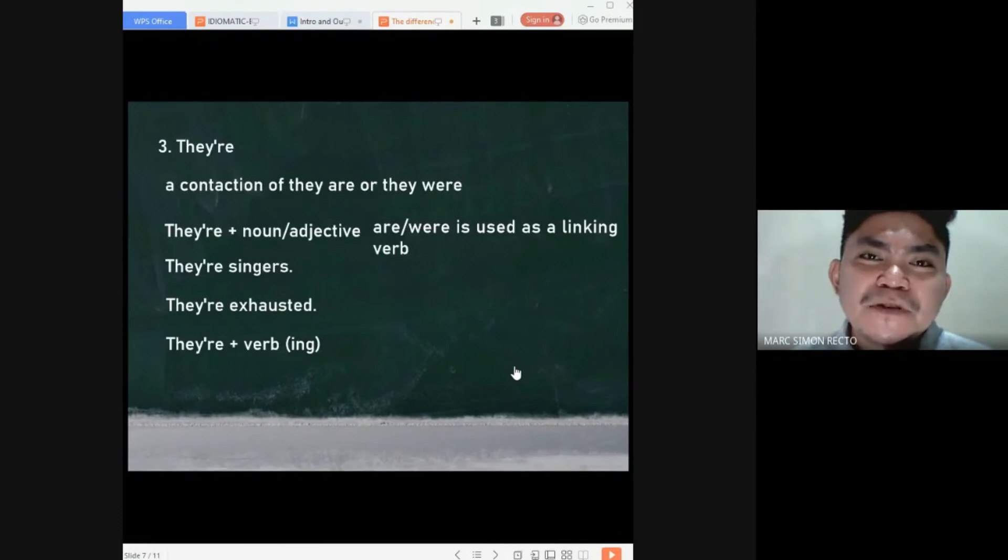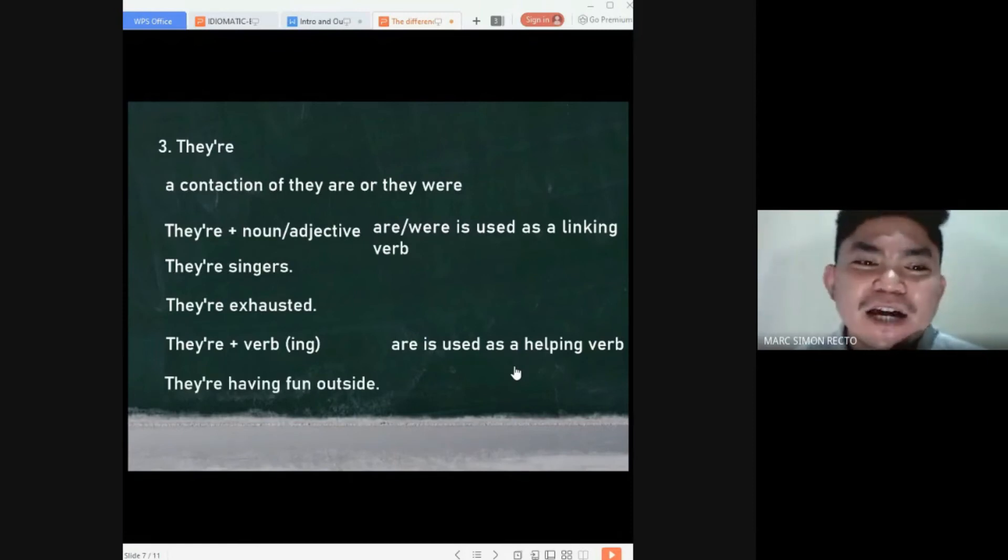Now, how about if the word there is followed by the ing form of the verb and is used as a helping verb. So, this is the sentence or the example there. They're having fun outside. This one has a different function. It serves as a helping verb. The ing form of the verb. So, that is how you use the word there.